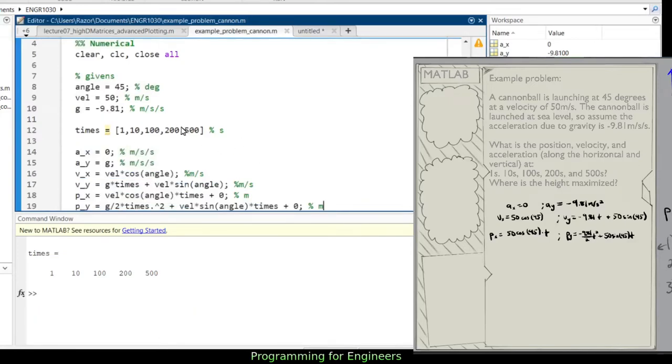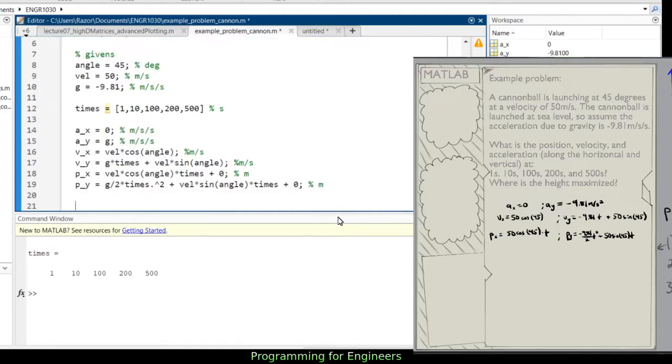So I can pull up this, t, times, replace all, save me some time, run it, and yeah, we've got times 1, 10, 100, 200, 500. So what was it we were looking for? We were looking for position, velocity, and acceleration along horizontal and vertical at 1 second, 10 seconds, 100, 200, 500.